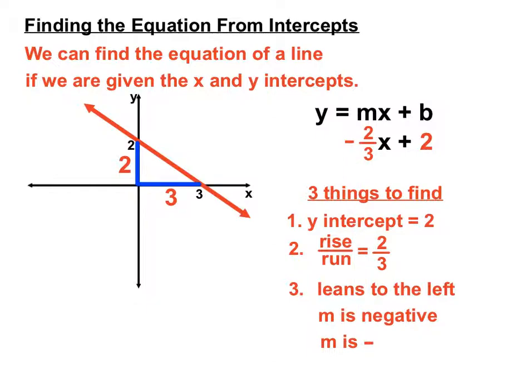So there are our three things as we piece that together. We end up with an equation from just those two intercepts. We find the equation of that line is y equals minus 2 thirds x plus 2.